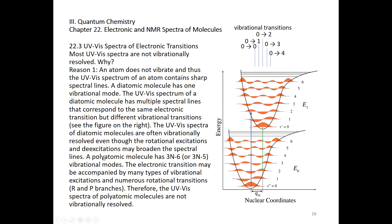A polyatomic molecule may have 3N-6 or 3N-5 vibrational modes. If you have a nonlinear molecule, you have 3N-6 vibrational modes. If you have a linear polyatomic molecule, you're going to have 3N-5 vibrational modes. In that case, the electronic transition may be accompanied by many, many different vibrational excitations.